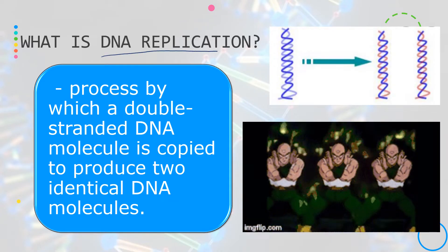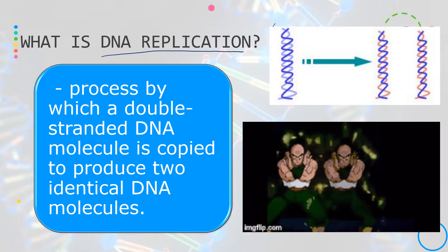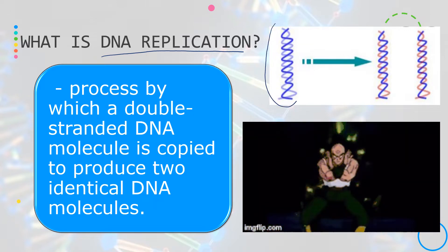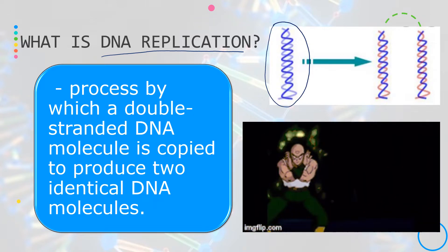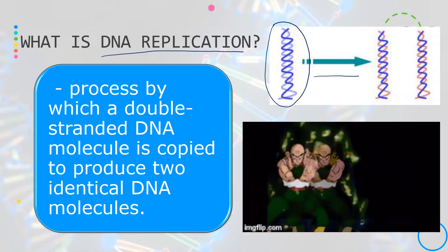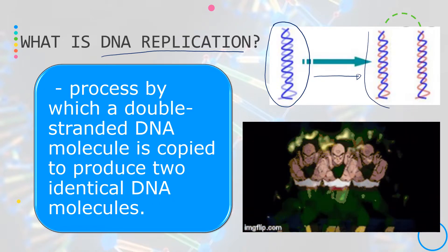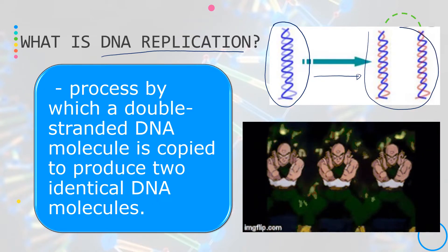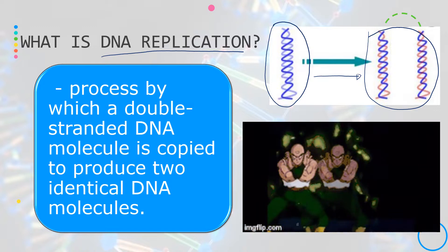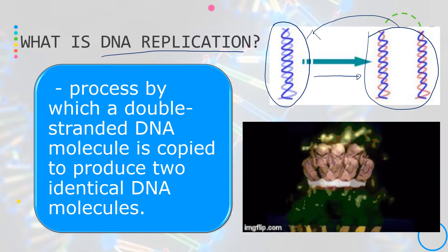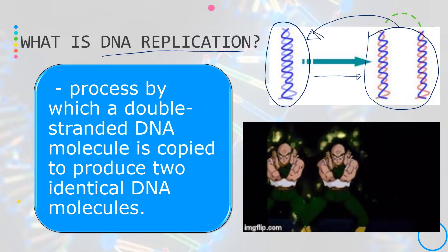What is DNA replication? By definition, DNA replication is the process when a double-stranded DNA is copied or replicated, and at the end of the process, we have two DNA molecules that are the same or identical to the original DNA molecule.